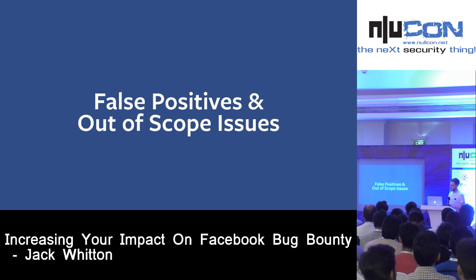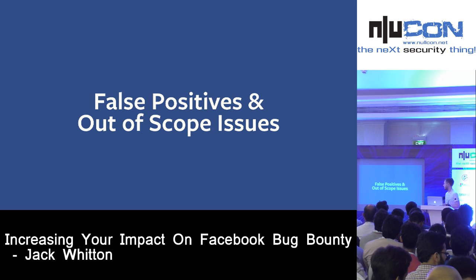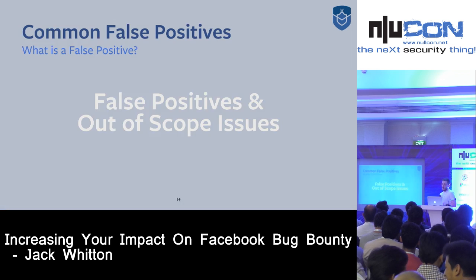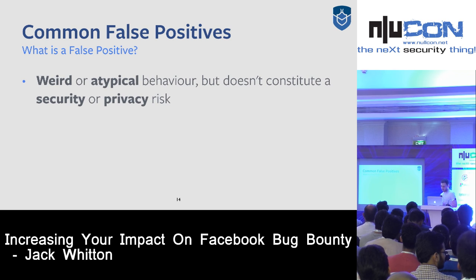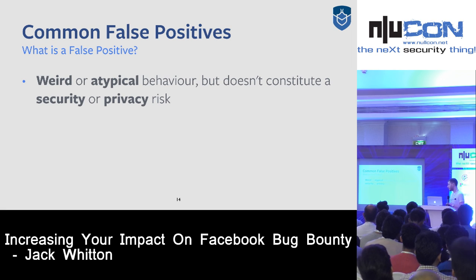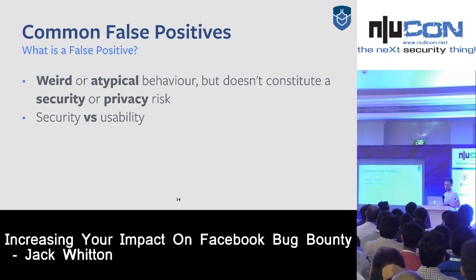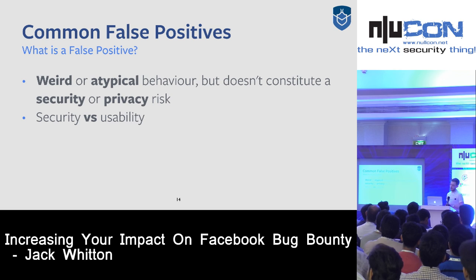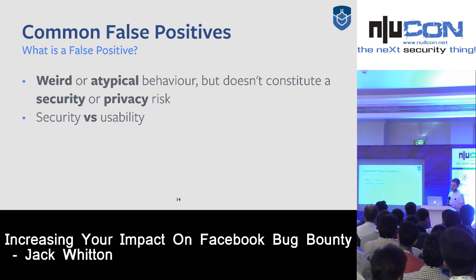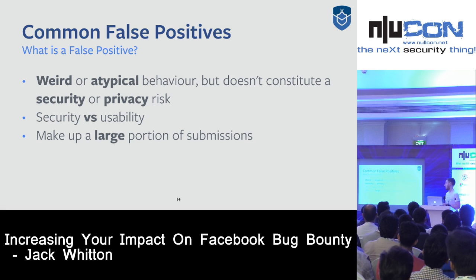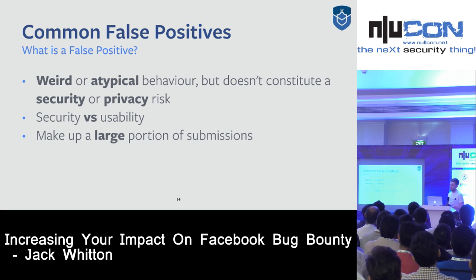Let's talk about the false positives we receive at Facebook. We receive over 100 reports a day and quite a few of these aren't actually legitimate. A false positive is weird or atypical behavior that doesn't necessarily constitute a privacy or security risk. There's also a security and usability trade-off — some things you might think of as security issues are actually intentional features or decisions we've made to increase usability without putting users at risk. These make up a large portion of our submissions, and legitimate reports can get buried under hundreds of false positives.